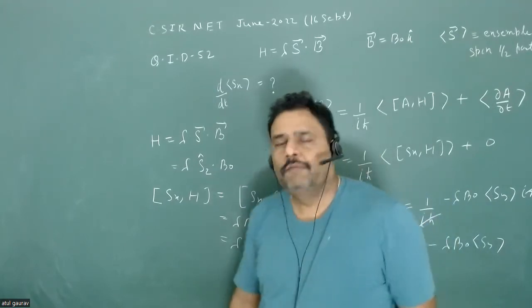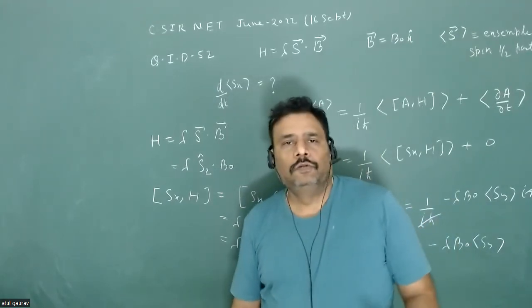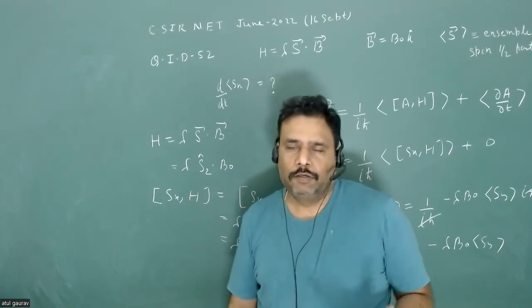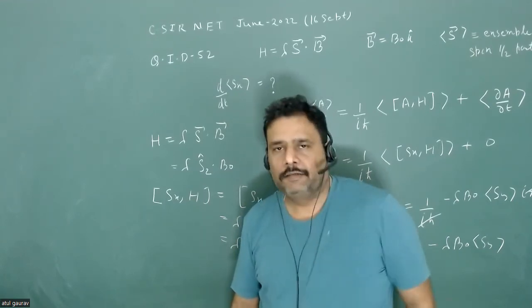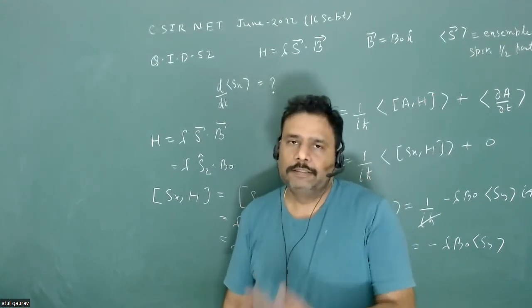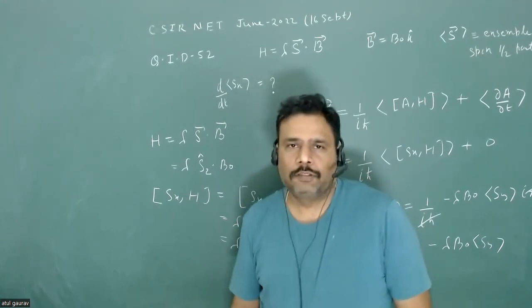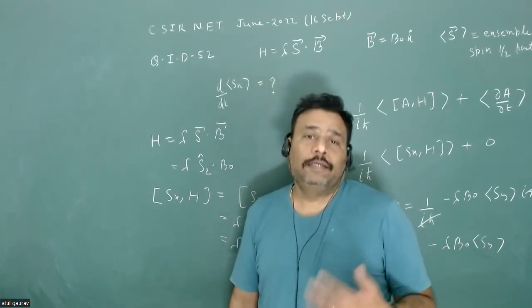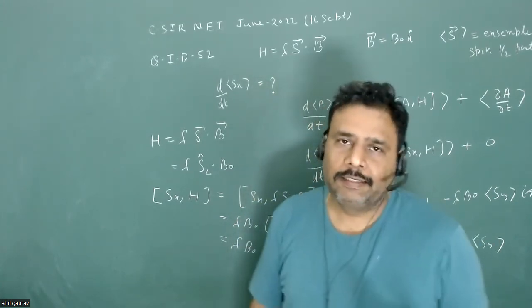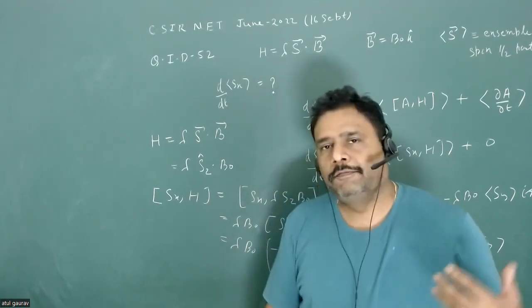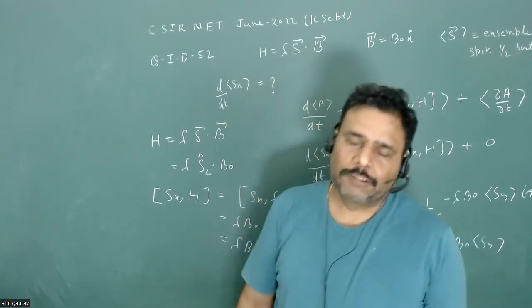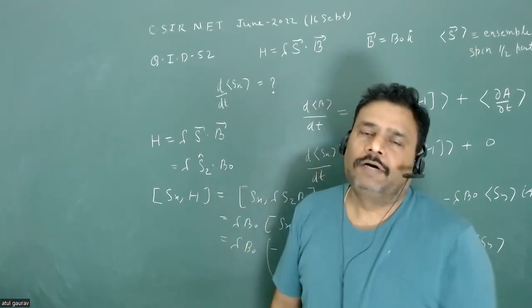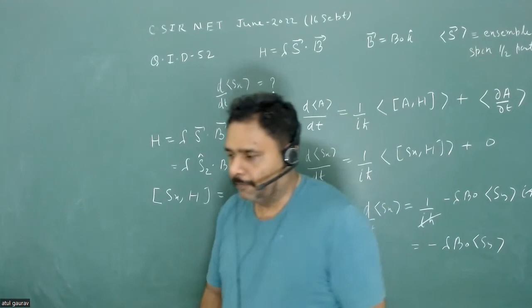So this is a straightforward problem if you know how the time evolution of average value of any operator works. And Ehrenfest theorem deals with it very nicely. So this is again one signal that now your problem can go into Heisenberg picture in upcoming examination. Because this is just a beginning of Heisenberg picture of quantum mechanics. Thank you.